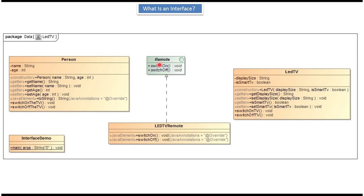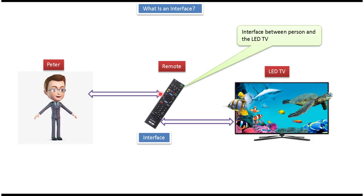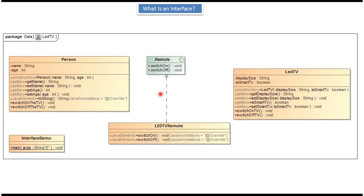Here I have defined the Remote interface which represents the remote. It has two methods: switch on and switch off. These two methods are abstract methods which don't have any implementation. Here you can see the LED TV Remote class which implements the Remote interface and provides implementation of the switch on and switch off methods.